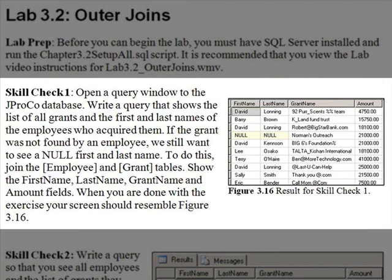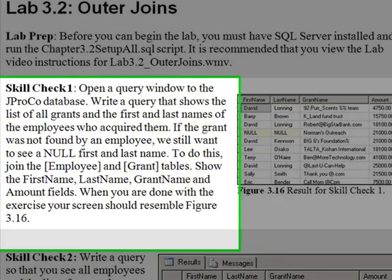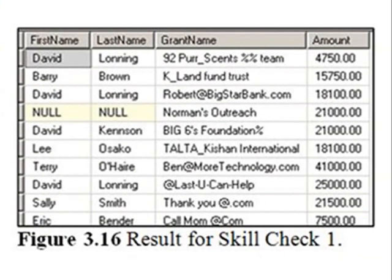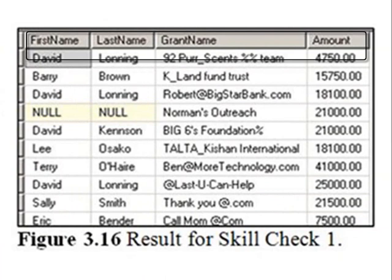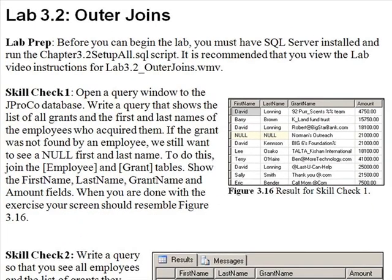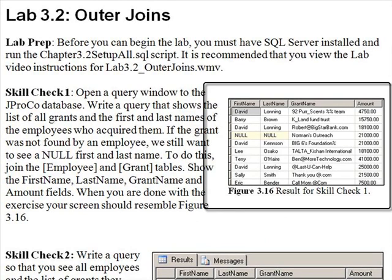It's time for Lab 3.2 Skill Check 1. Open a query window to the JPROCO database. Write a query that shows the list of all grants and the first and last names of the employees who acquired them. If the grant was not found by an employee, we still want to see a null first and last name, and the grant to show up. Show the first name, last name, grant name, and amount fields — that should be four fields in your result set. When you are done with your exercise, your screen should resemble figure 3.16.